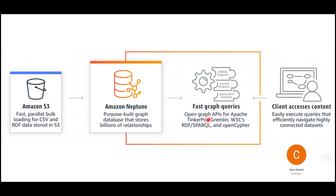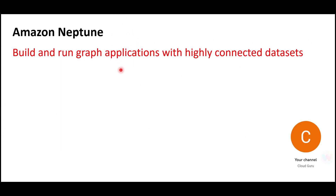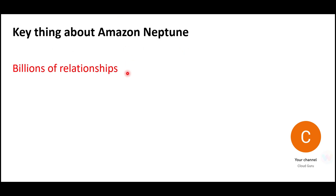With Neptune, you can write fast graph queries and clients can access this content very fast. For example, when you go on Amazon, it will directly tell you if you bought this, other people have also bought some of the other products. It does it very fast using this Neptune database, which is a graph database that saves billions of relationships. That is one of the key things about Amazon Neptune. Whenever you have a question in the certification exam talking about relationships, it is always Neptune.